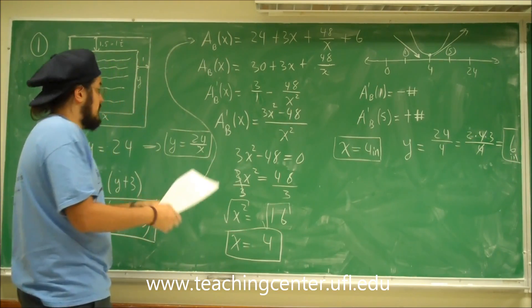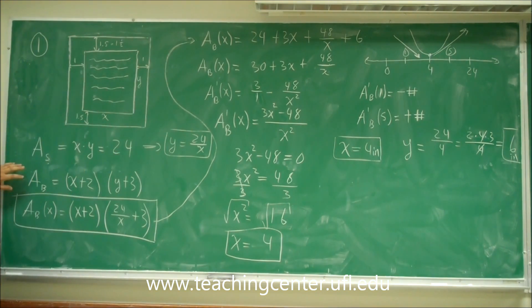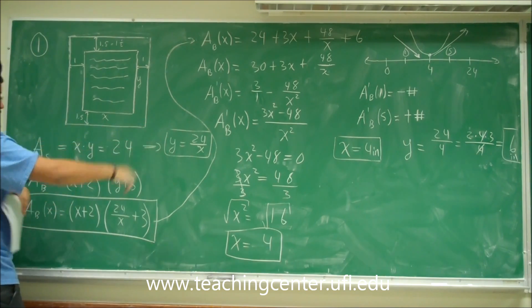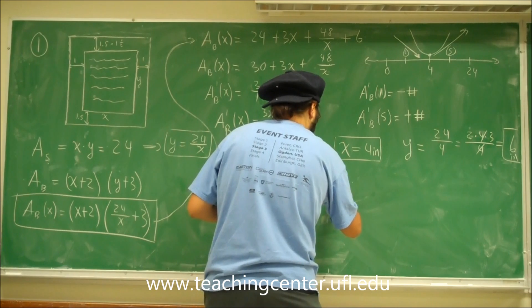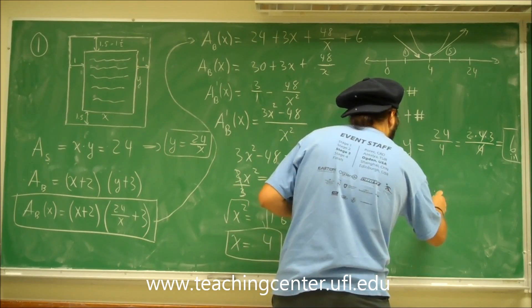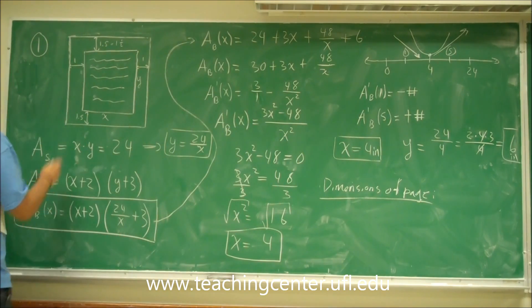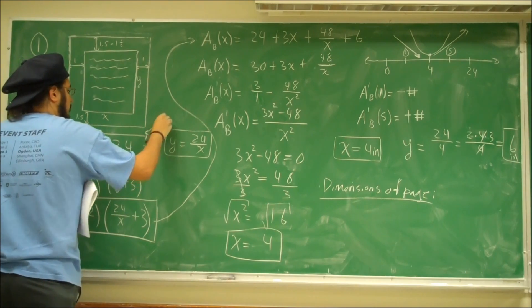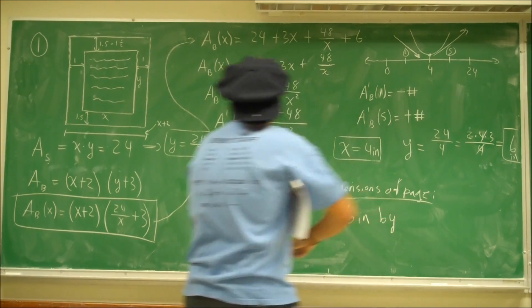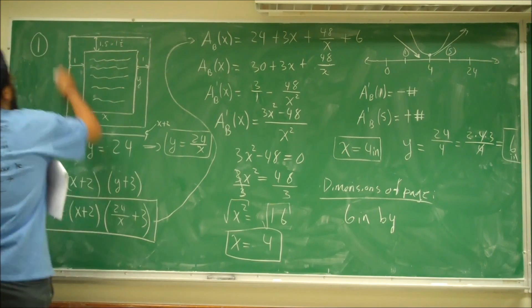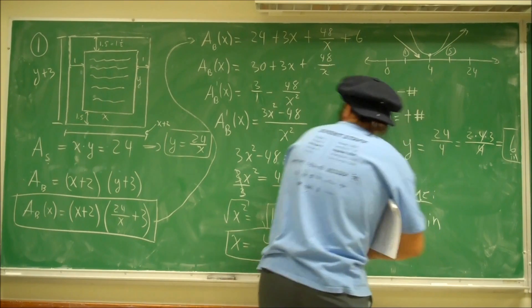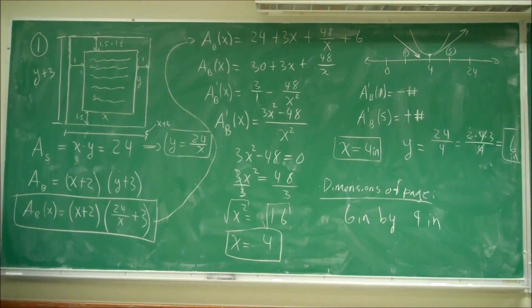Now we want the dimensions of the whole page. The width of the page is x + 2 = 4 + 2 = 6 inches. The height of the page is y + 3 = 6 + 3 = 9 inches. So the dimensions of the whole page are 6 inches by 9 inches, and that answers the problem.